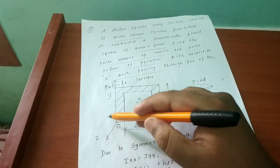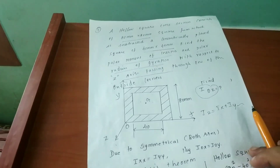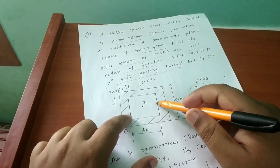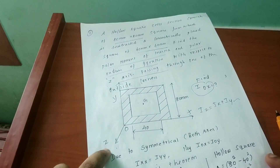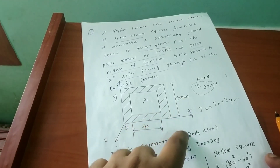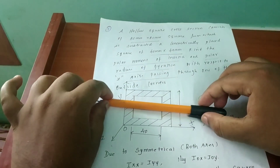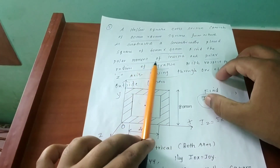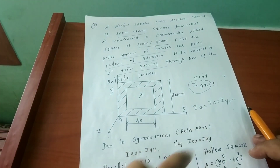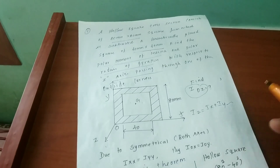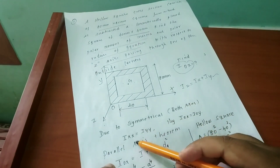First, we have to find the O-axis. We don't need to worry about the central axis because we need to find the O-axis, so we use the O-axis. Both axes are symmetrical, so the moment of inertia about x and y are equal — that is, Ix equals Iy.